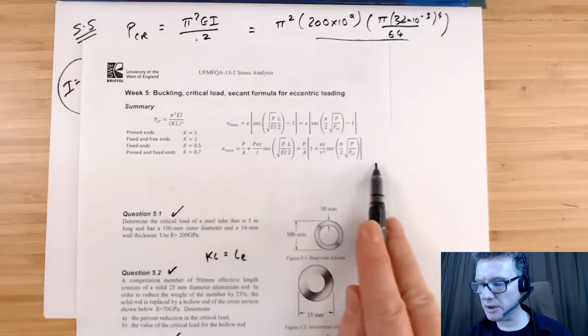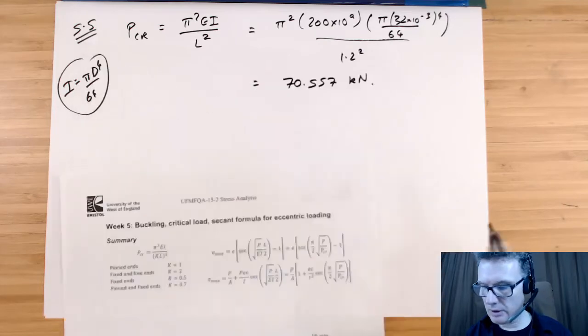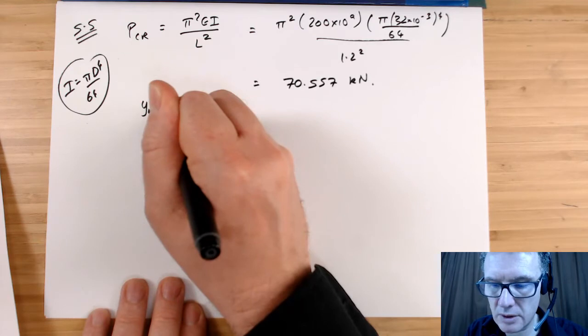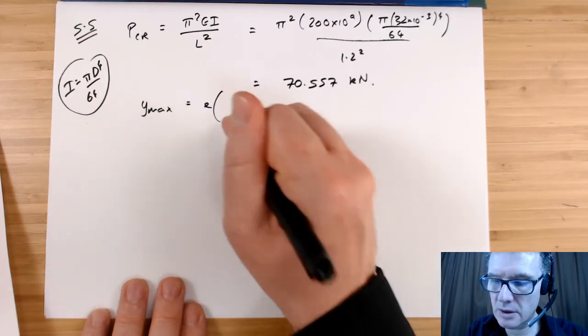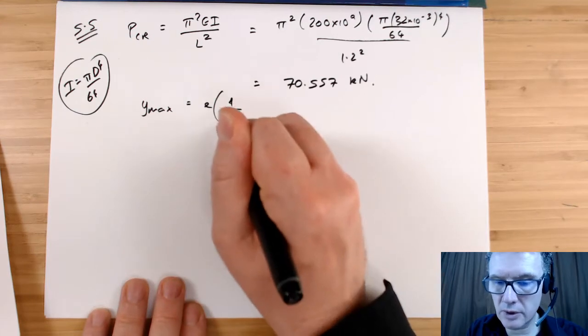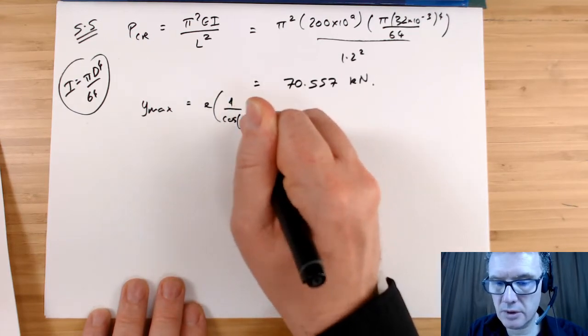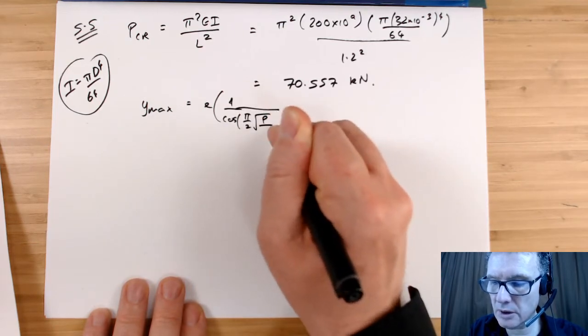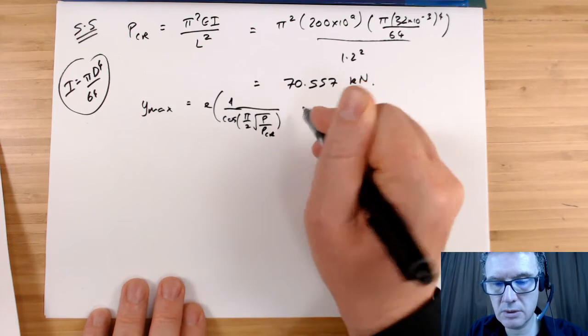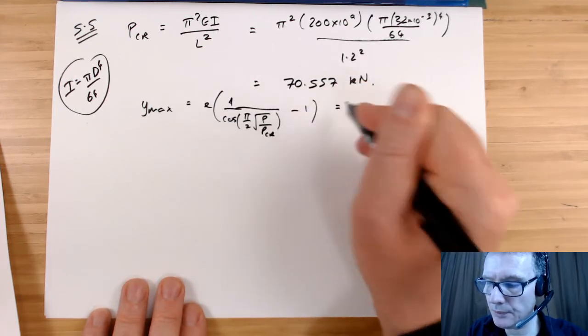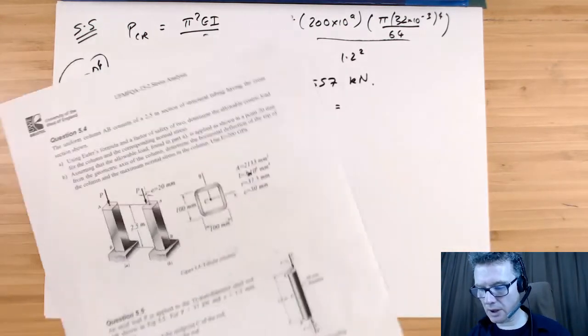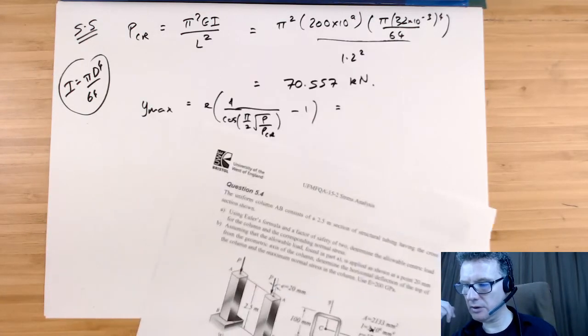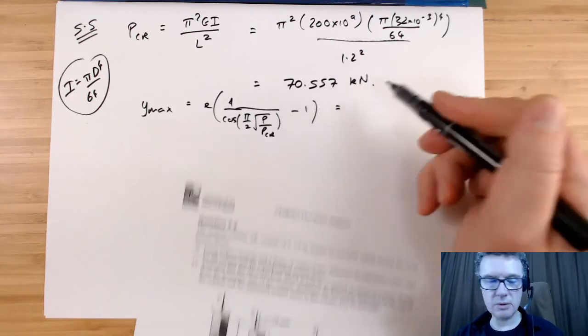So the maximum deflection is going to be e times [1 over cos(π/2 × √(P/Pcr)) - 1]. And what is P? P is 37 kilonewtons. That's in kilonewtons as well.